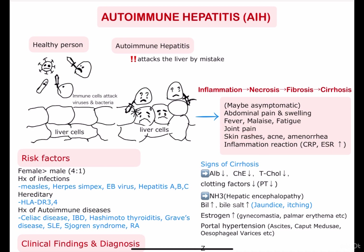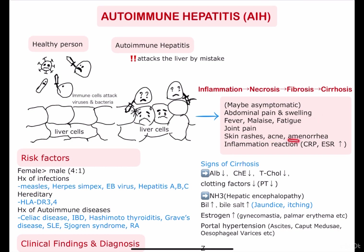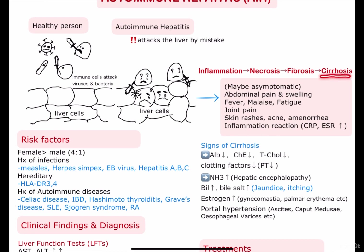You can also see joint pain and skin rashes, as it is an autoimmune condition. Also, the liver is supposed to detoxify and metabolize toxins, and as it can't function well, you may see acne and other skin conditions. You may also remember amenorrhea, as women with severe liver disease may often show amenorrhea.